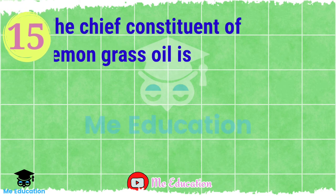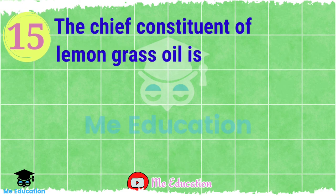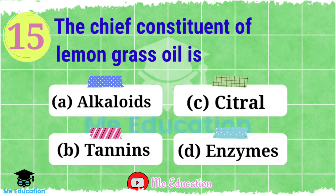Question number 15: The chief constituent of lemongrass oil is — Option A: alkaloid; Option B: tannins; Option C: citral; Option D: enzymes. Now pause the video and try to answer this question. The right answer is citral, Option C.